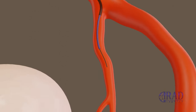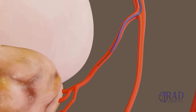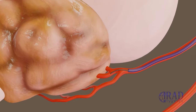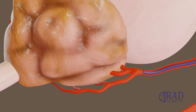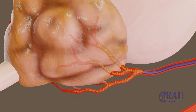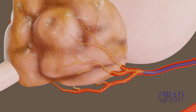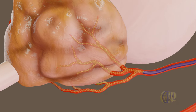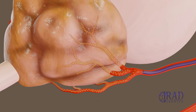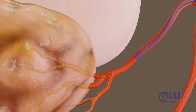A combination of microcatheter and microwire is advanced through the base catheter to select the prostate artery. Once collaterals are bypassed, the microwire is removed and prostate artery embolization is performed using particles until blood flow is ceased. Once embolization is completed, the microcatheter is removed.